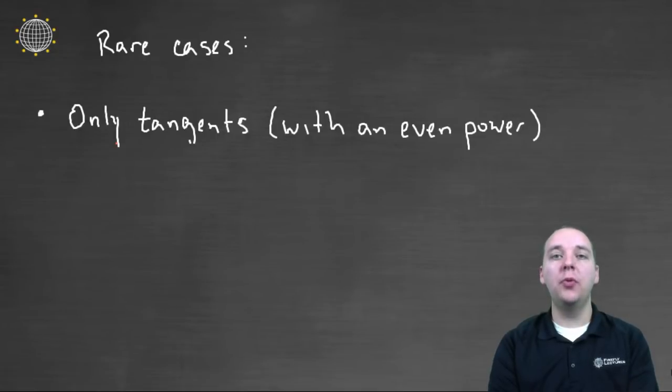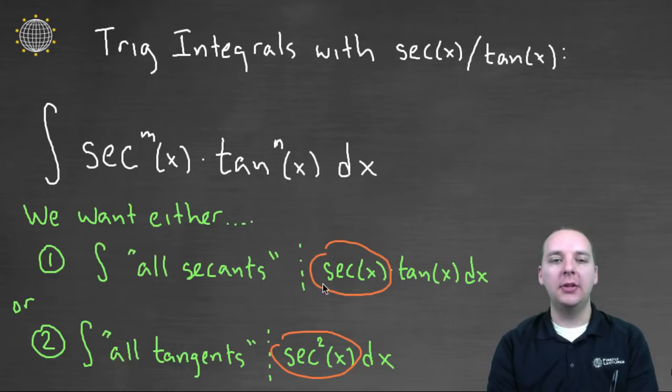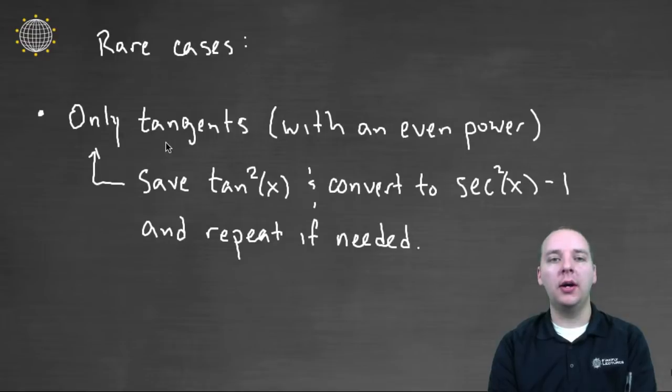Now there are also two somewhat rare cases that we need to briefly talk about as well. The rare case, one of the rare cases is this, is what if you only have tangents in your integral? In other words, you don't have any secants. Unfortunately, that's bad news, because if you look back here at your original two ideas to save a secant tangent or to save a secant squared, both of these du's have secants, as you can see. So if you don't have any secants, neither of these ideas are going to work. So what do we do if there are no secants at all? Well, here's the trick. We're going to save tangent squared, and we know we have tangent squared because there's an even power of tangents, or so we're assuming. And we're going to convert that tangent squared into secant squared minus one, which is a trig identity. Now we might need to repeat this process if this is a particularly high even power of tangents, but this is the basic idea.